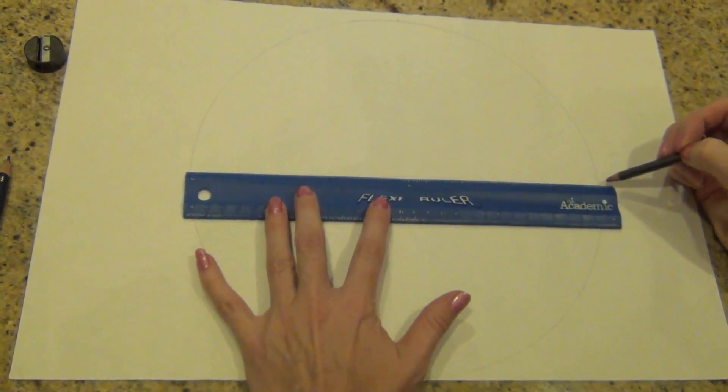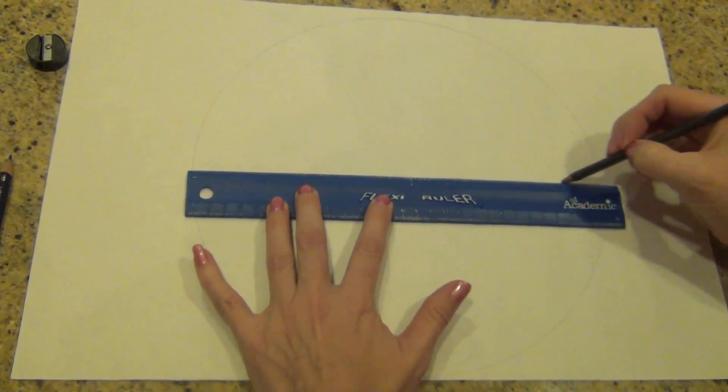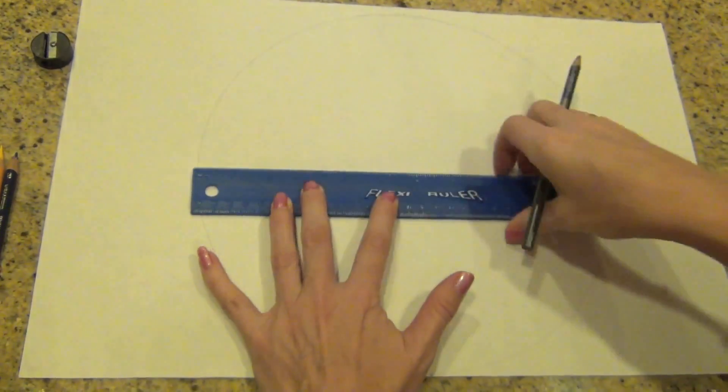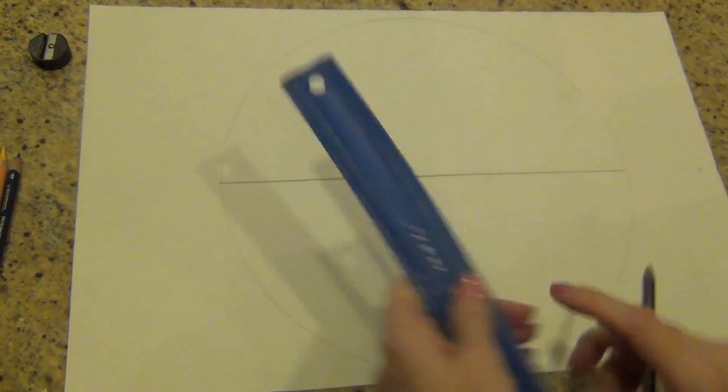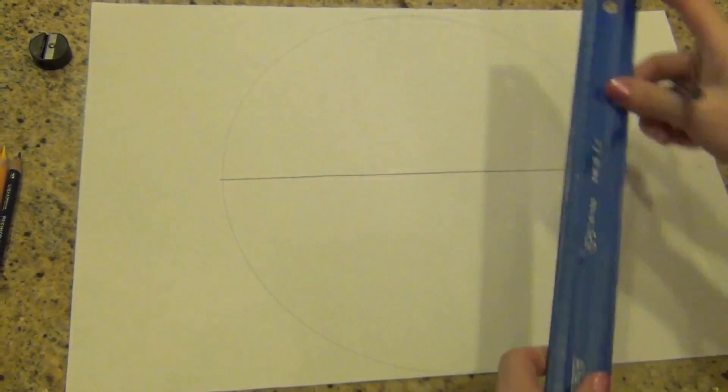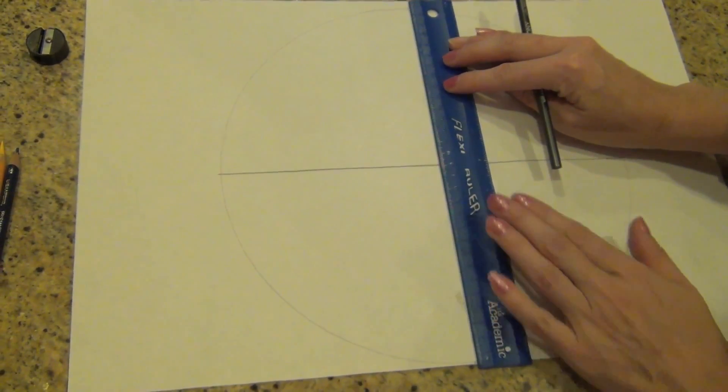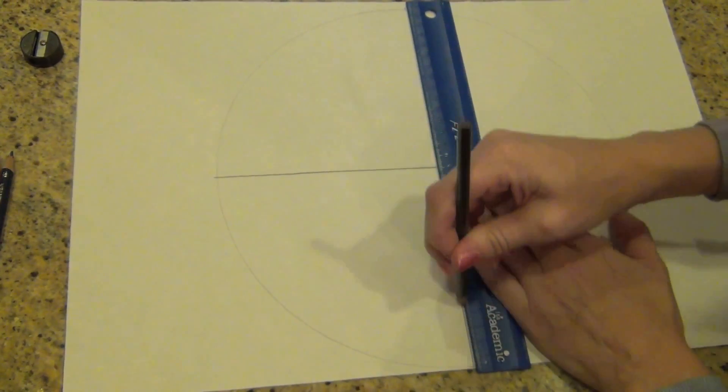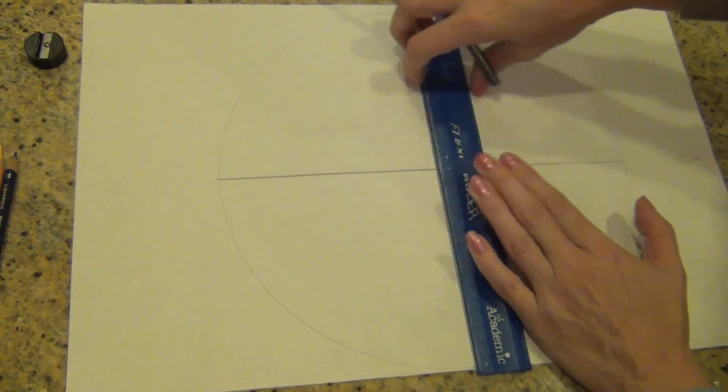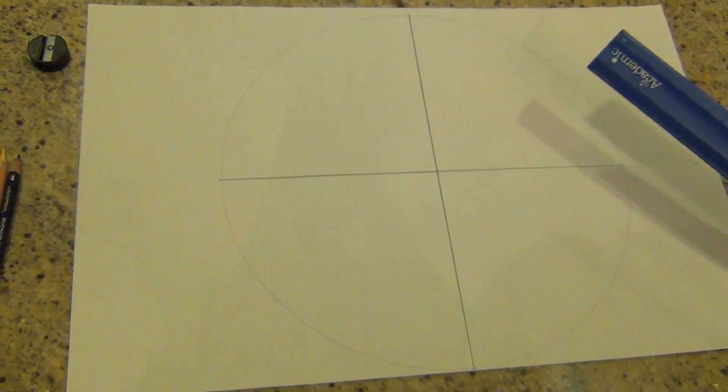And then I'm going to divide it into four. So I'm going to make this line a little bit darker for you to see. In half. And then I'm going to divide straight up and down so that I have quarters. All right, so now I have four pieces and I'm going to divide this into 12.